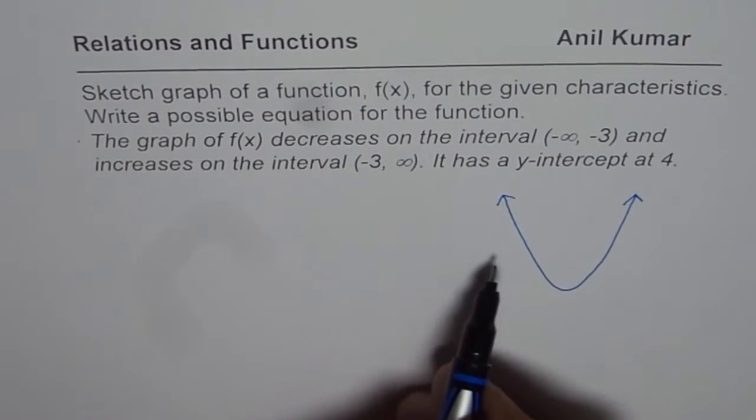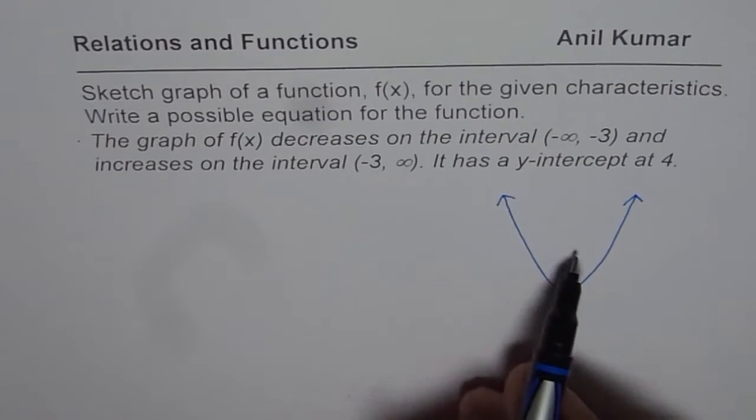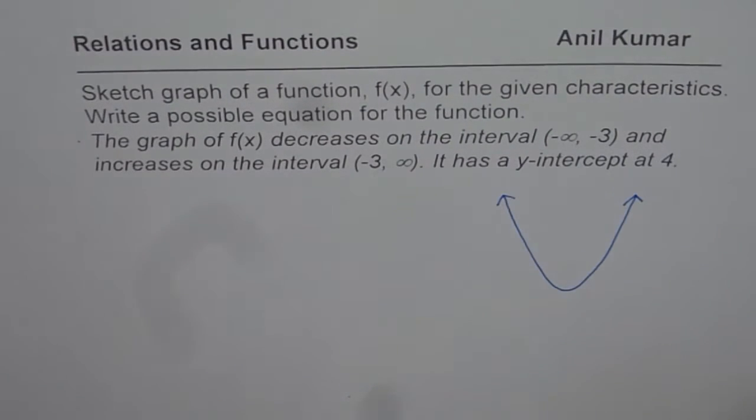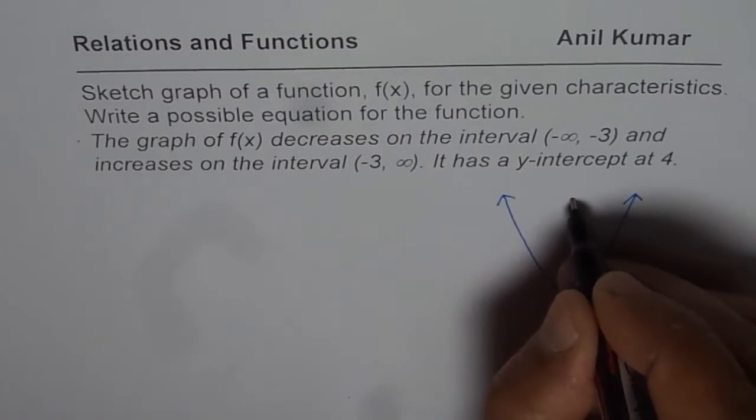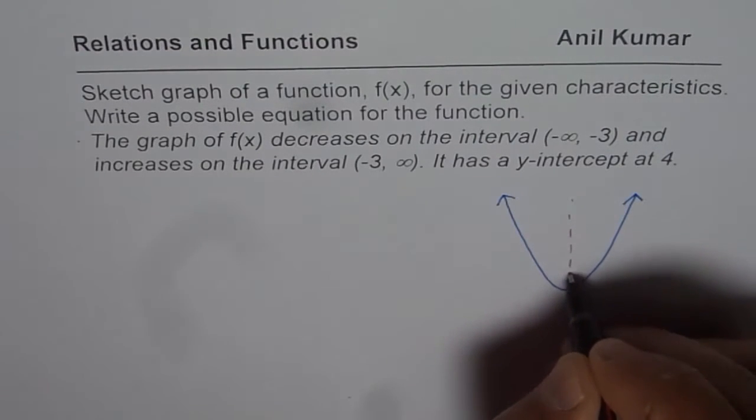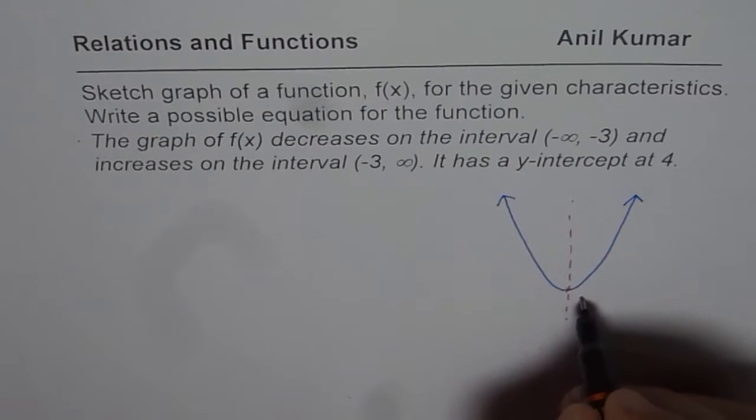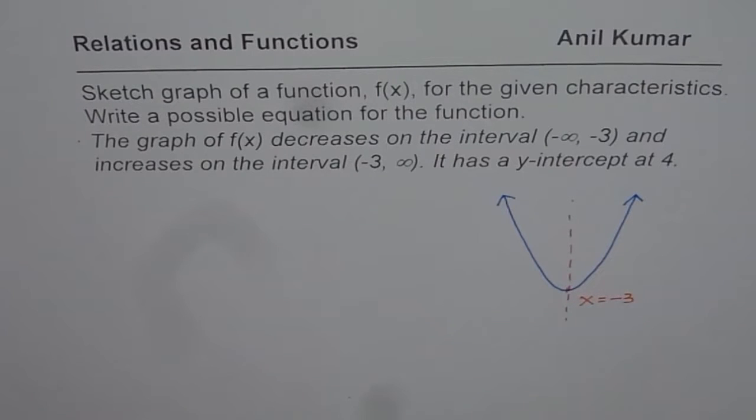Now it is decreasing from, we always see from left to right, so from -∞ to -3 it is decreasing. So we are sure that at this point we have the vertex or the turning point. The only thing known about this point is that x value is -3.